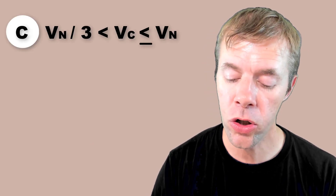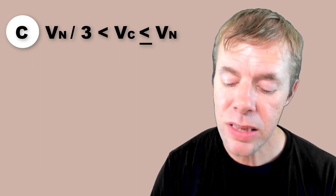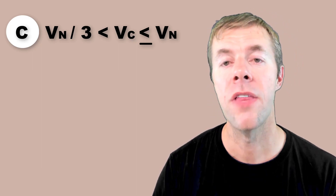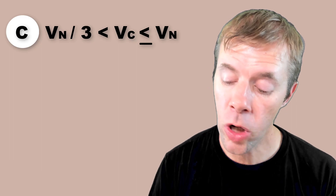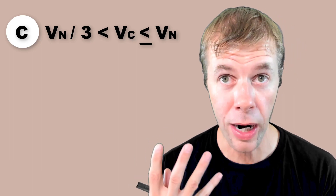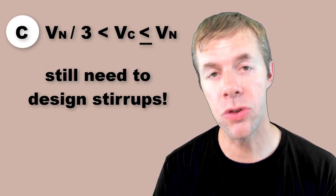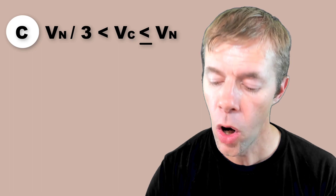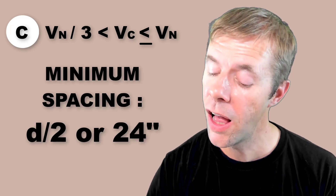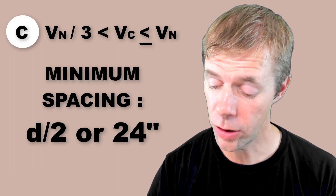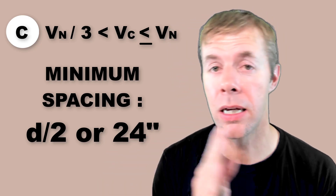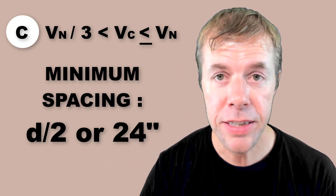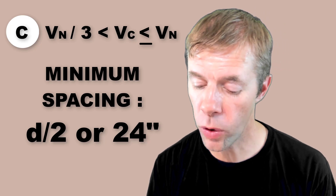In Case C, your concrete is a little stronger — stronger than one-third but still less than what you need, somewhere in the middle. The concrete is providing more capacity, which is great, but we still need to design stirrups. Now we need a minimum spacing that's a bit more relaxed: d over 2 or 24 inches.